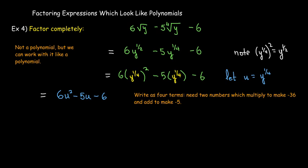I have 6 times negative 6, so I need two numbers which multiply to make negative 36, add to make negative 5. And those numbers would be what? Negative 9 and positive 4. So I rewrite the minus 5u or negative 5u as negative 9u and positive 4u.